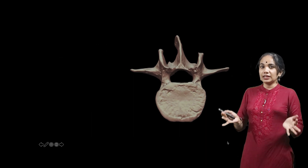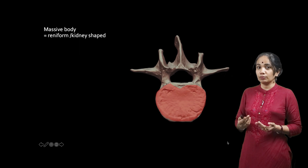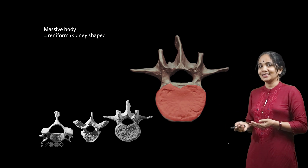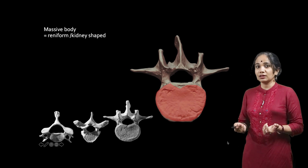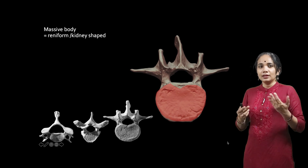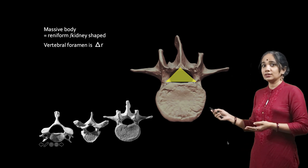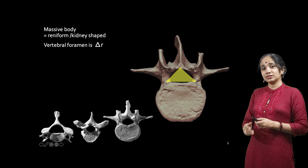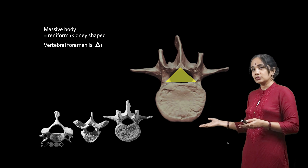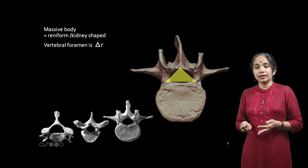The lumbar vertebra has a really large body, and it is kidney-shaped or reniform — that is why it is called a reniform body. Comparing with the other vertebrae, the bodies of cervical and thoracic vertebrae are really small compared to the massive body of the lumbar vertebra. The vertebral foramen of the lumbar vertebra is triangular in shape. The cervical foramen is circular, and the thoracic is mildly triangular or even circular, but in the case of the lumbar it is mostly triangular in outline.